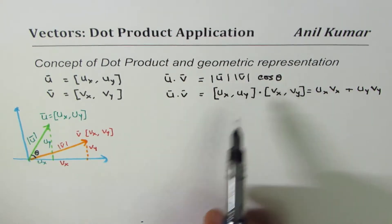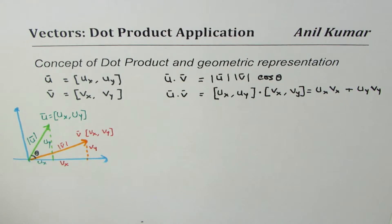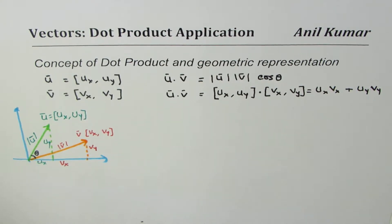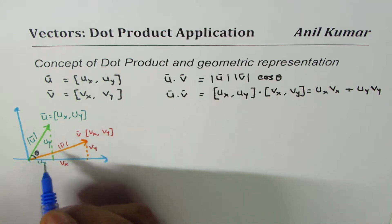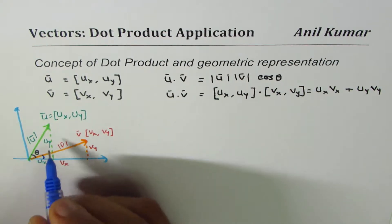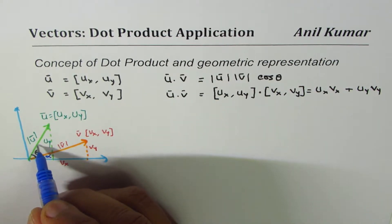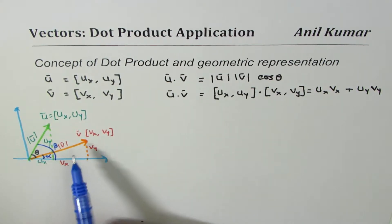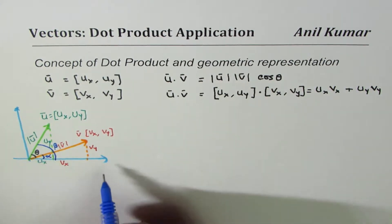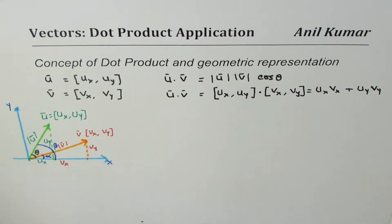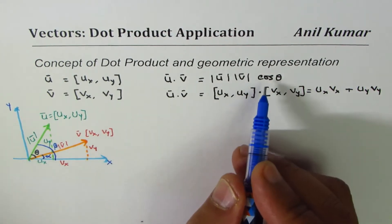Let's say vector v makes an angle alpha with the x-axis, and vector u makes an angle beta with the x-axis. So let vector v make alpha with the x-axis and let vector u make beta angle with the x-axis. These are our vectors for this derivation.